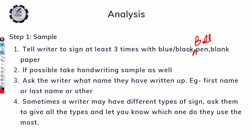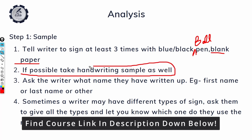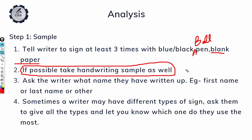The color must be blue or black because this helps you know the pressure the writer is applying. For paper, tell the writer to give a blank paper, because blank paper helps you identify the baselines — whether the writing goes in an upward or downward direction. The best way to do analysis is to have a handwriting sample as well, as it tells you a lot more about the writer than just the signature alone.